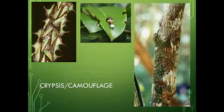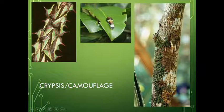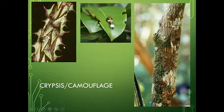Another type of strategy organisms use to avoid being eaten is crypsis, or camouflage — looking like something else. These are treehoppers that look like thorns. These are not actually thorns; each individual object here is an insect on this plant. Organisms just don't recognize them as insects or food.